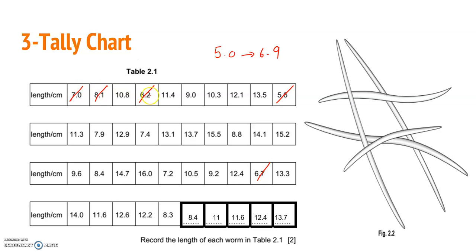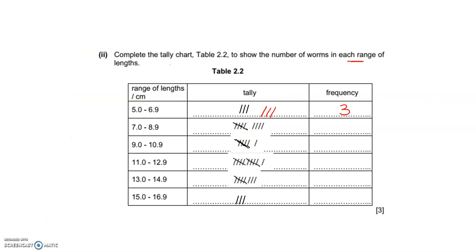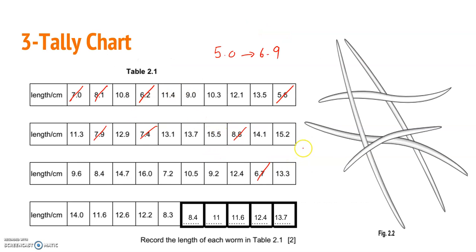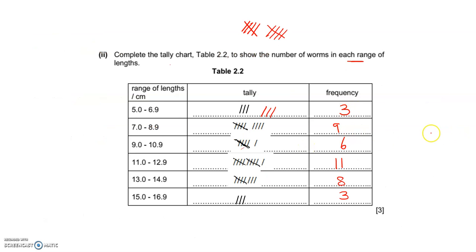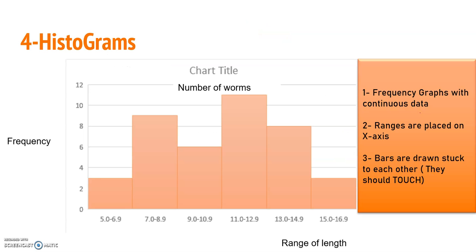I continue counting — one, two, three, four, five and so on. For the tally chart, I draw marks: one, two, three, four, and for five I draw a diagonal cross. Then for six, seven, eight, nine, ten I start a new group. This way I can easily read the frequency: for example, five plus four equals nine, or five plus one equals six.